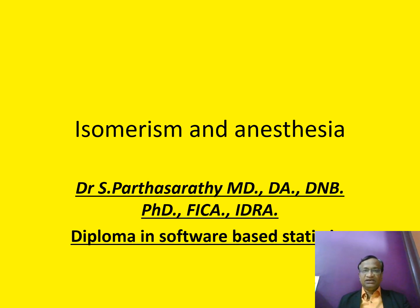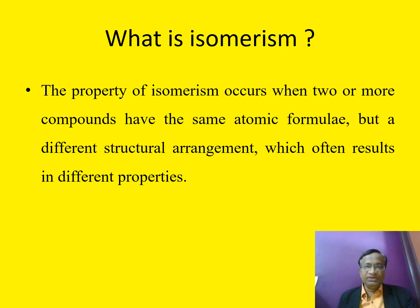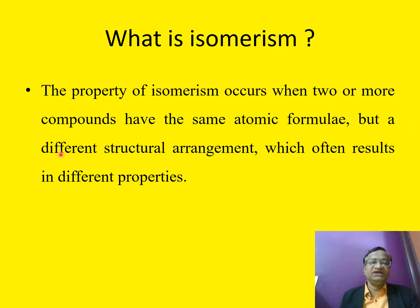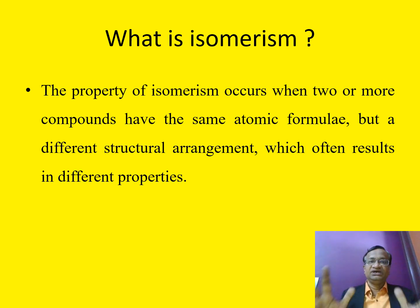Today's topic is about isomerism and anesthesia. It is a relatively difficult topic relating to the chemistry of drugs. Isomerism is when two or more compounds have the same atomic formula but a different structural arrangement — different properties may be present. Two compounds, same atomic formula but different chemical structure — this is what is called isomerism.